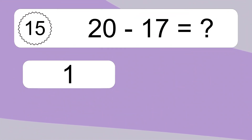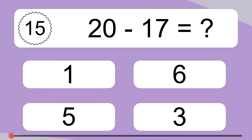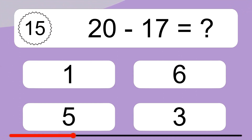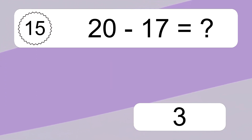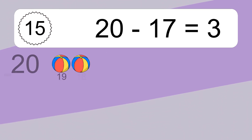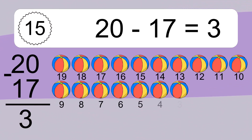20 minus 17 equals what? 20 minus 17 equals 3. Let's count it.